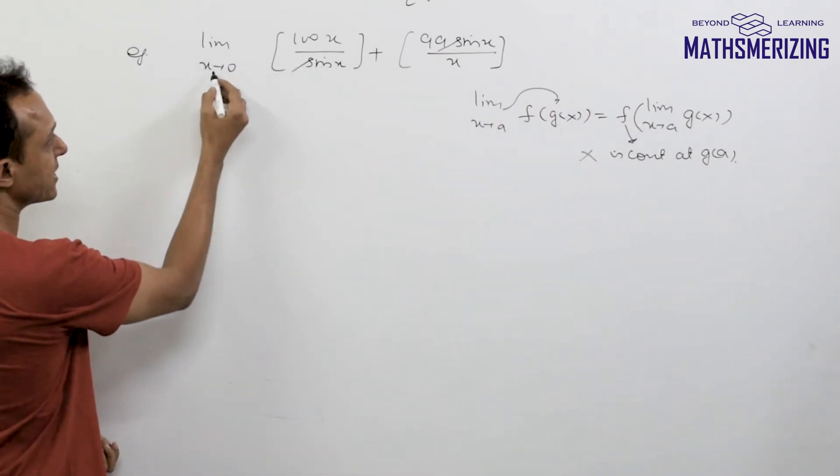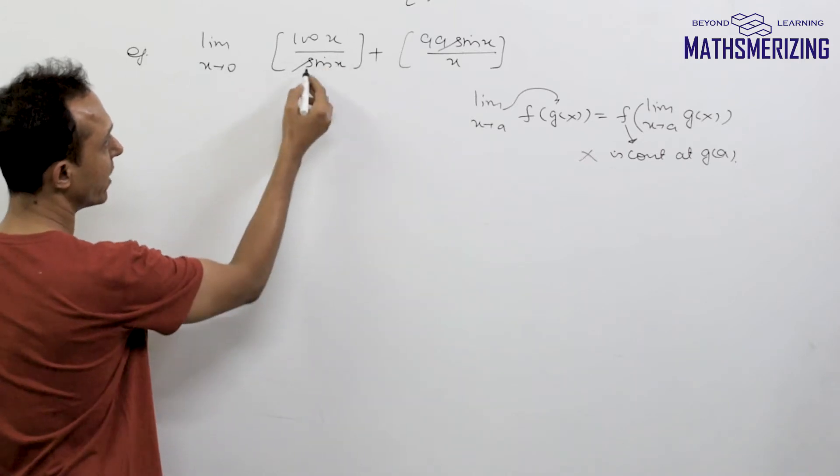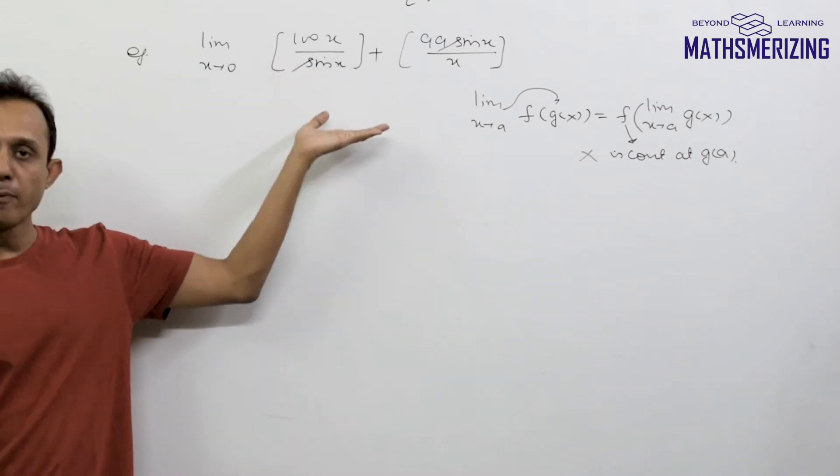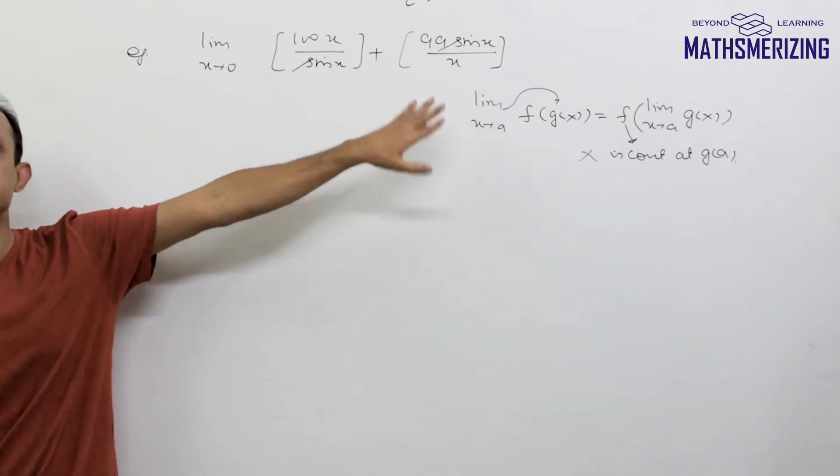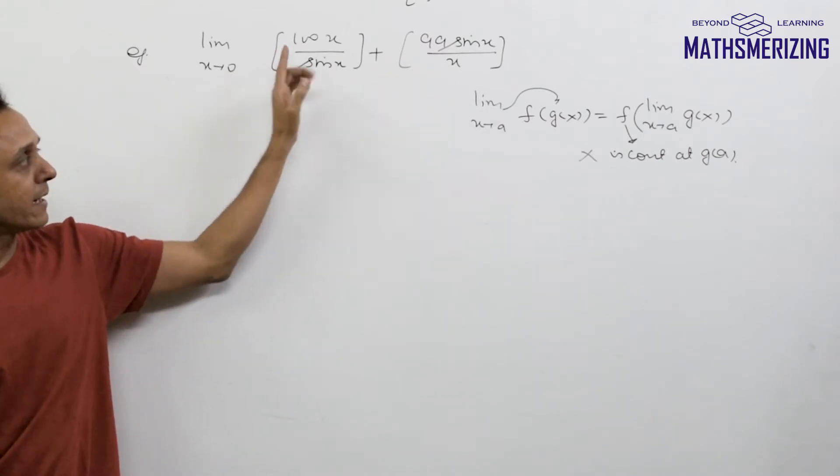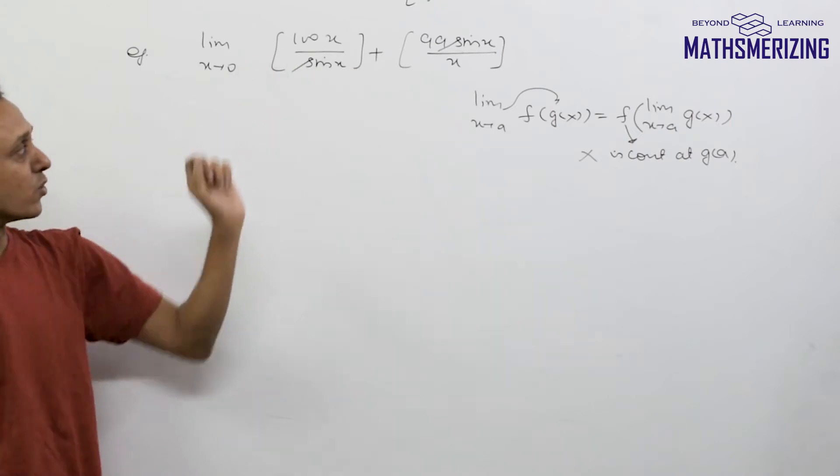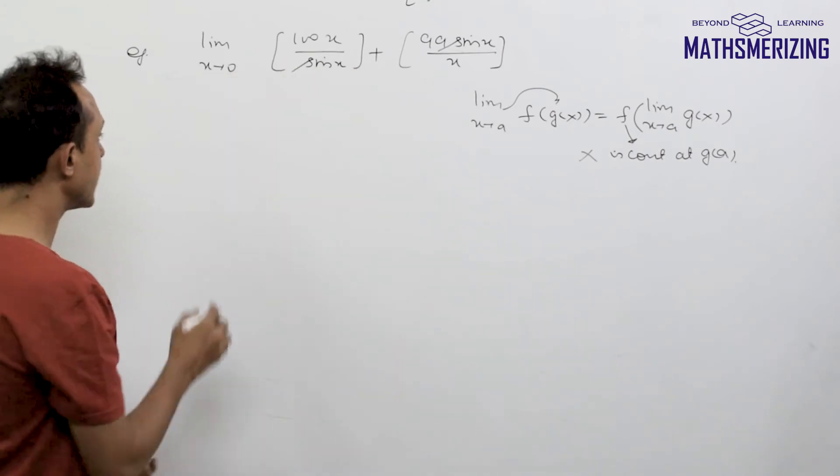When I look at this, if I take this limit inside I'll get 100x/sin(x) equals 100. But at integral points, the greatest integer function is discontinuous, so I cannot take this limit inside. What do we do in this case?